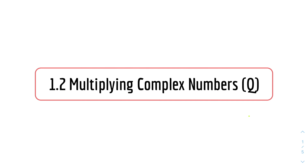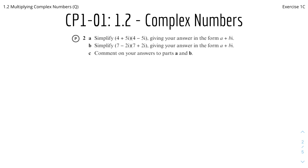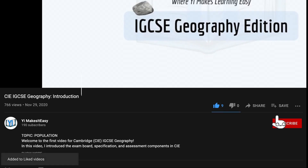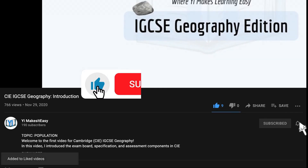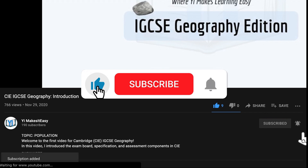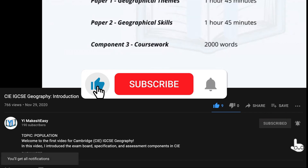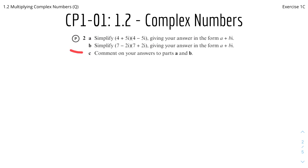Hey friends, my name is Yi and you're watching Yi Mr. Easy. Welcome to a new video for A-level further maths today. We have 1.2 for multiplying complex numbers, the questions video. We'll get started with the first question, but before we get into it, don't forget to leave a like, subscribe and ring the notification bell. These questions are from Exercise 1C from the Core Pure textbook, so you can check it out yourself.